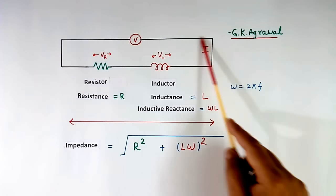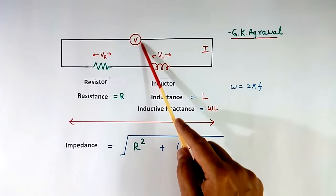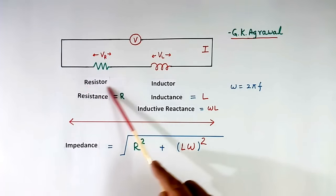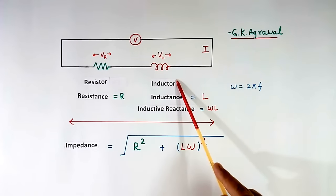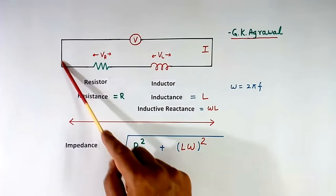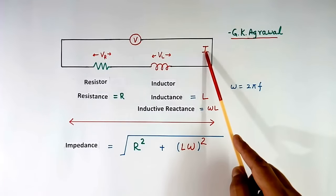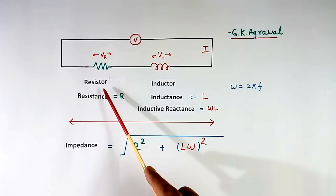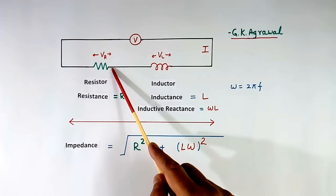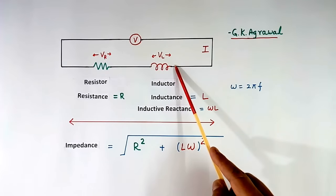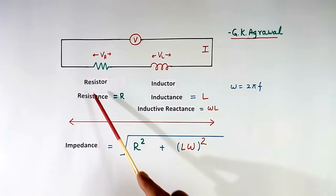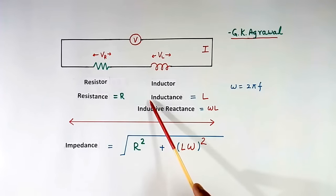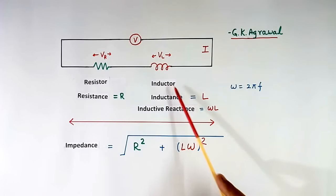This is a simple AC circuit with an AC supply. Voltage is V. This is a resistor, and this is an inductor. I is the current flowing in this circuit — the same current flows through both. Voltage across the resistor is VR, and voltage across the inductor is VL. Resistance of the resistor is R, and inductance of the inductor is L.